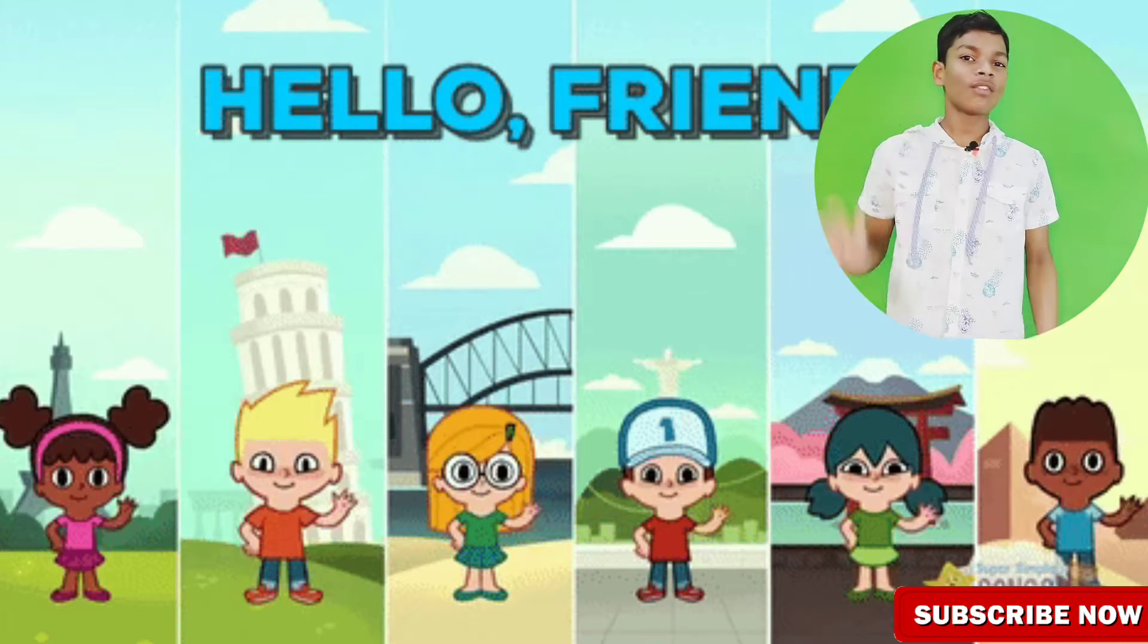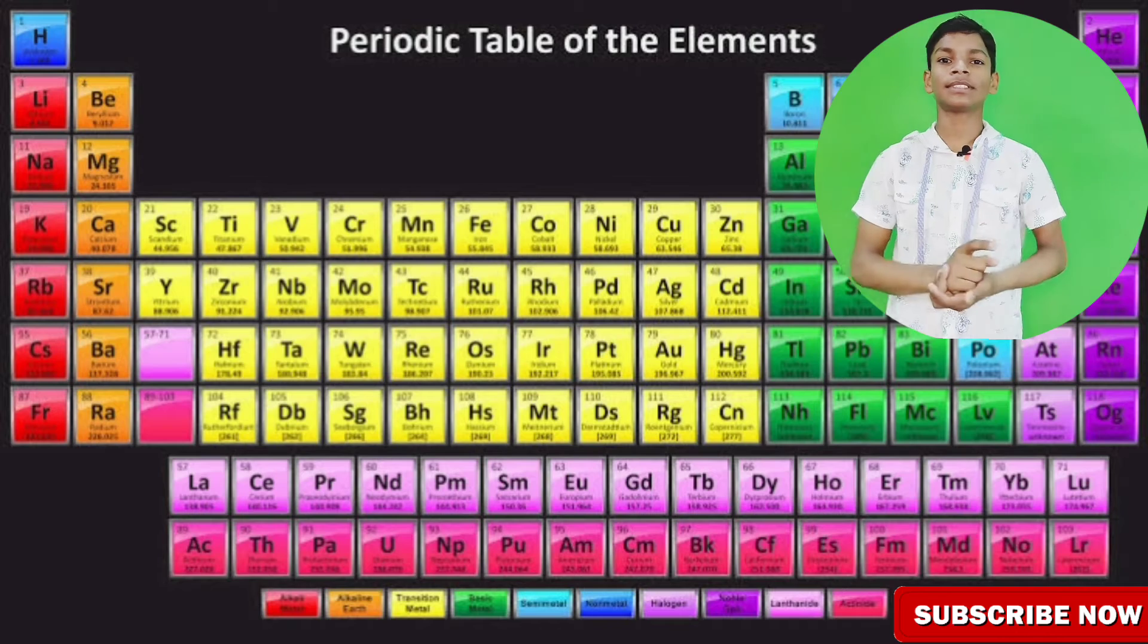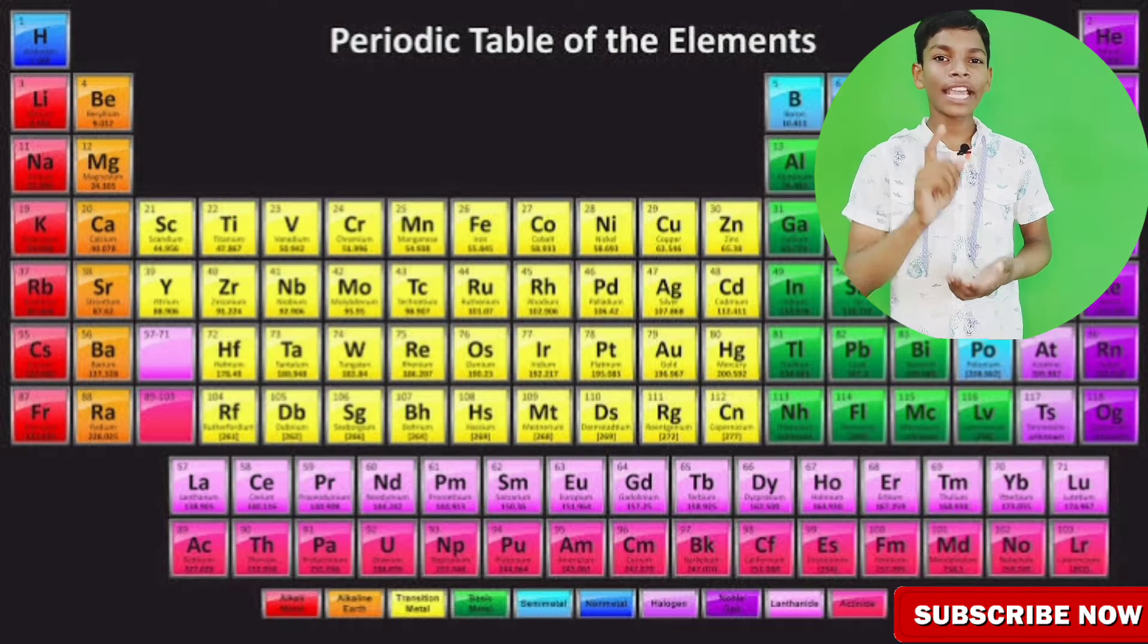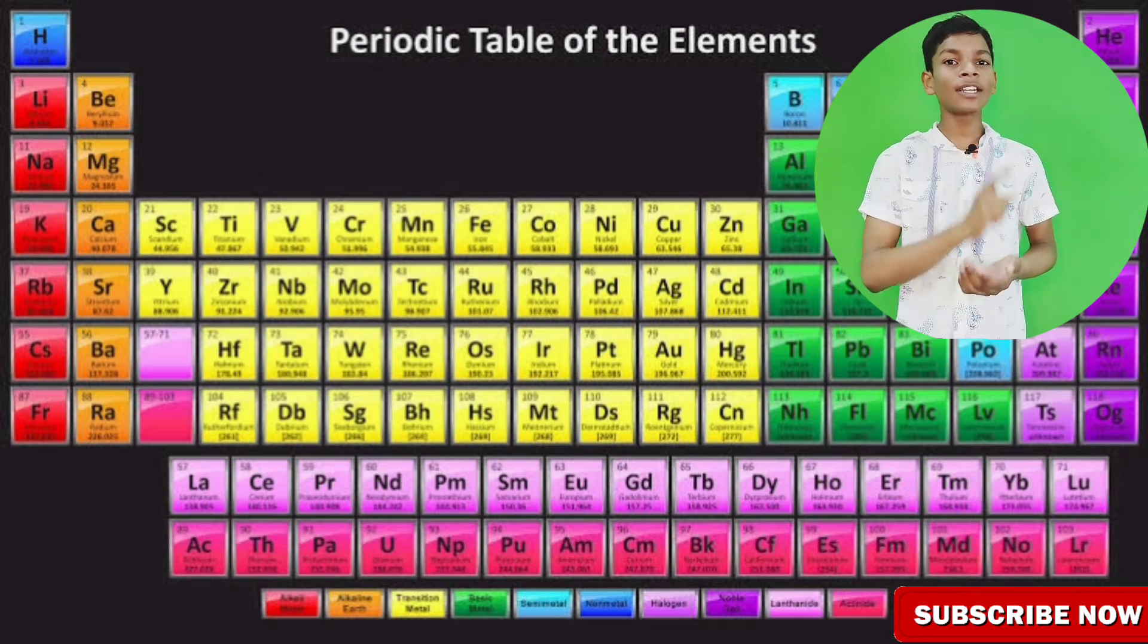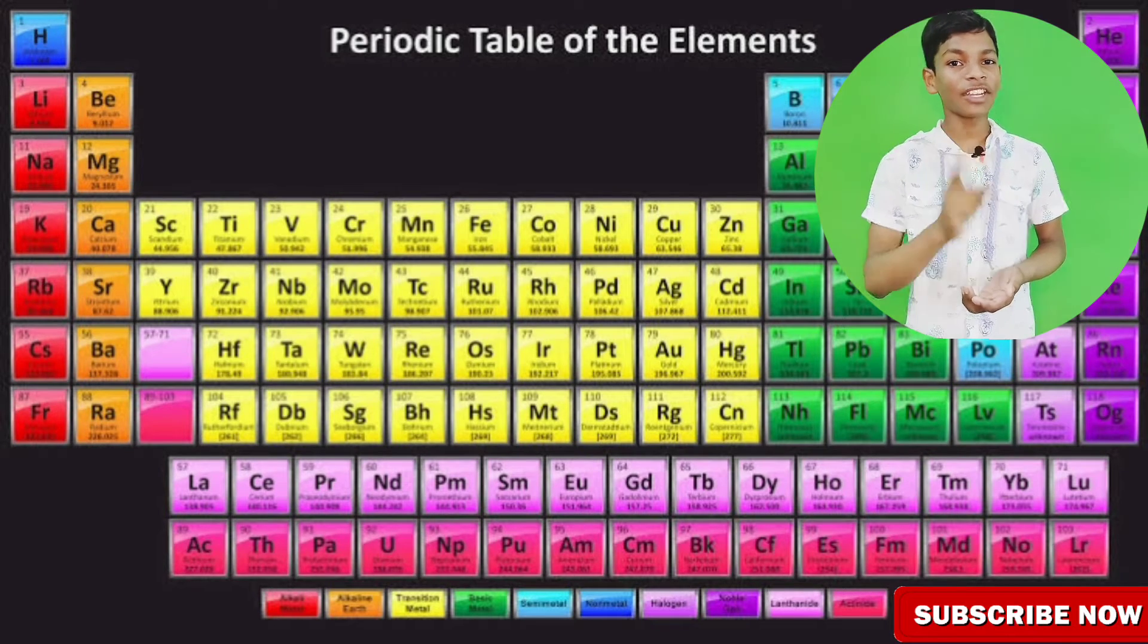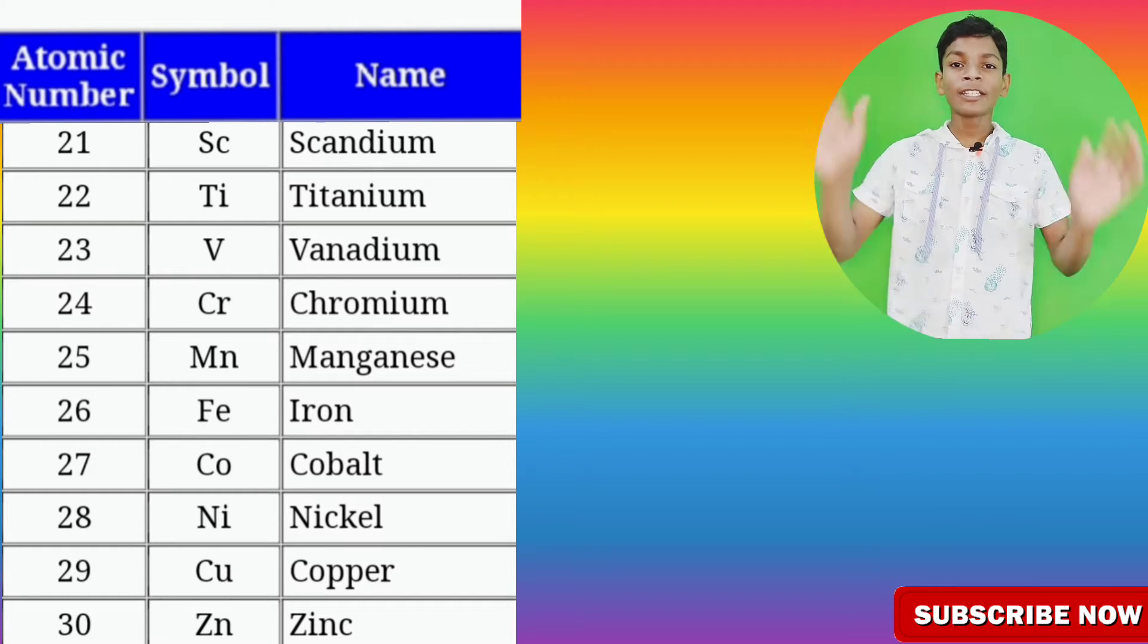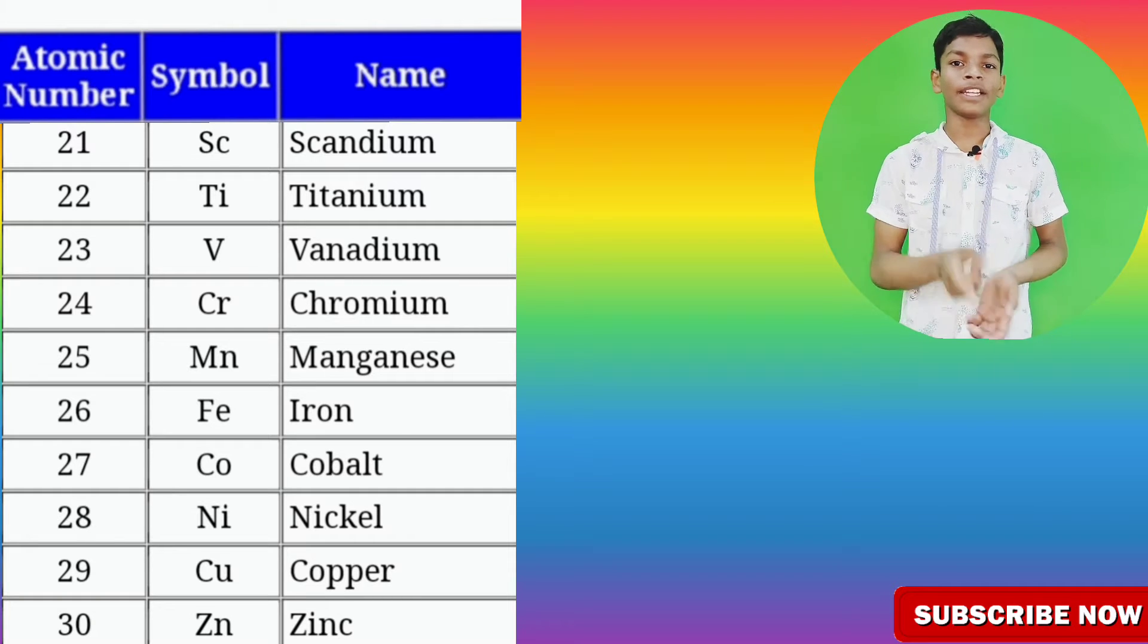Hello friends, welcome to YouTube channel Fun and Study Champs. Today we are going to learn chemical elements. There are 118 elements, but in this video we are going to learn only 10 elements in increasing order of their atomic number.